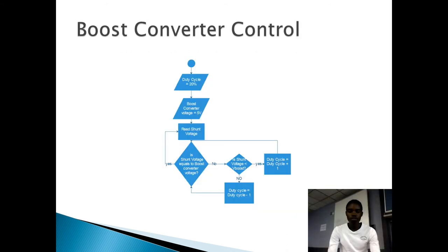We are using the boost converter to power on the microcontroller and the LEDs. So we need to keep the output voltage to a constant of 5 volts. So we use the PWM to control the output voltage. We set the duty cycle to 20% initially, which gives us the output of 5 volts. And then after that, we have to measure the output voltage and adjust it to 5 volts.